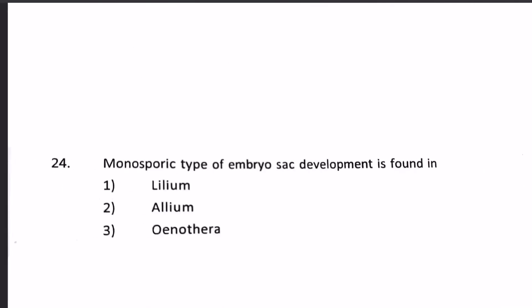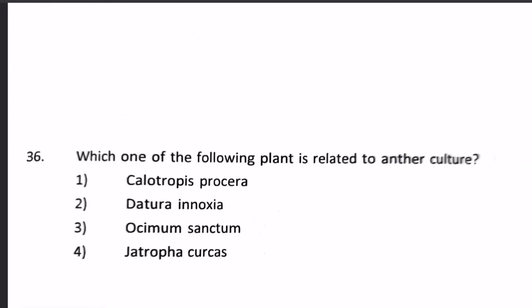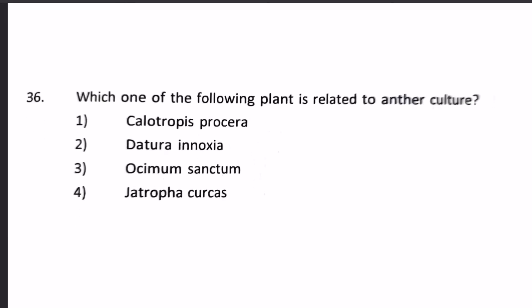So our answer will be Oenothera, which has a monosporic type of embryo sac development. Next question: which one of the following plants is related to anther culture? 1. Calotropis procera, 2. Datura innoxia, 3. Ocimum sanctum, 4. Jatropha curcas.